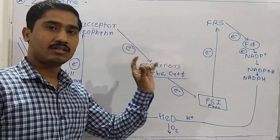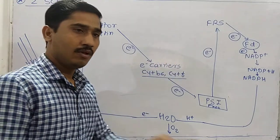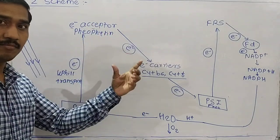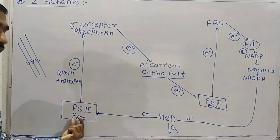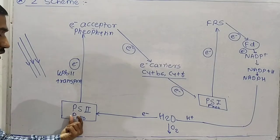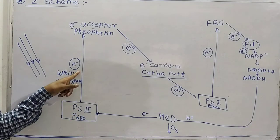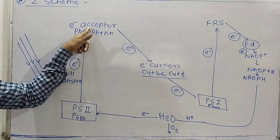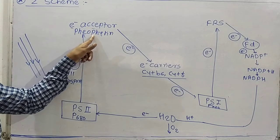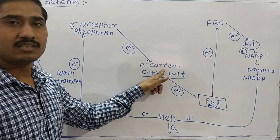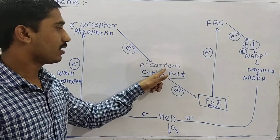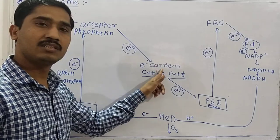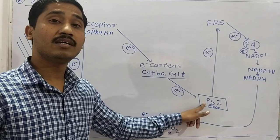To summarize the Z scheme: sunlight of wavelength 680 nanometers is received by P680, which becomes excited and repels an electron. This electron is transported to the electron acceptor pheophytin, and from pheophytin to the electron transport system consisting of cytochromes. From the electron carriers, the electron is transported to PS I.